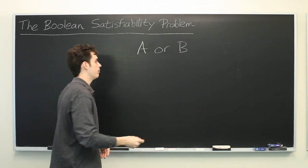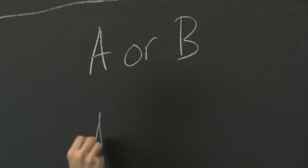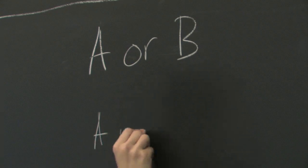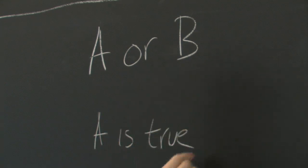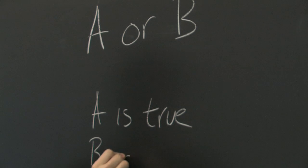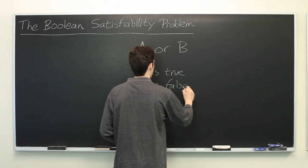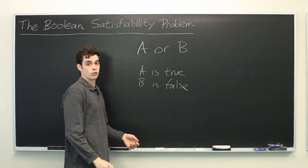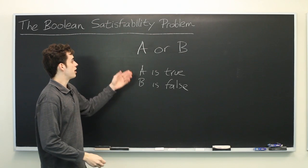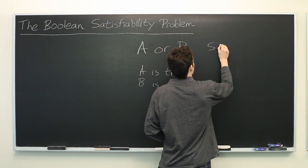In this case it is fairly simple. If we say A is true and B is false for example, then this expression will evaluate to true. This is said to be satisfiable.